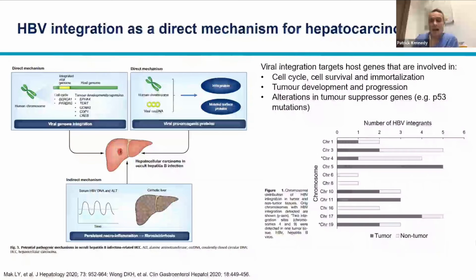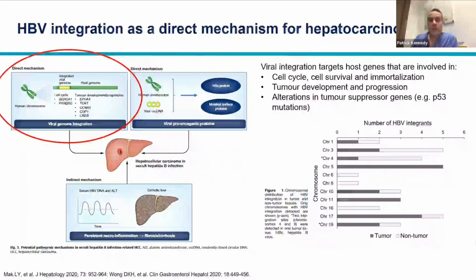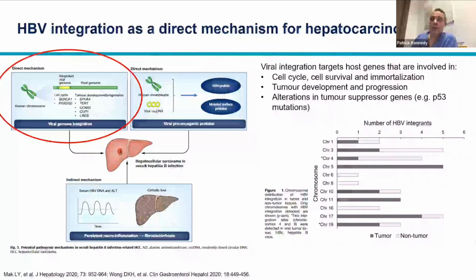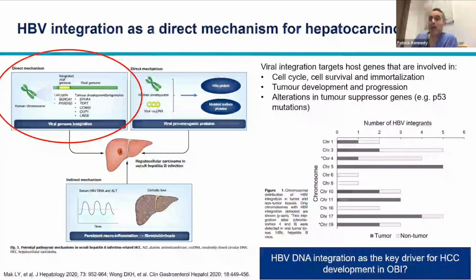Occult B infection — where surface antigen is absent but HBV DNA replicates at very low levels — is also important. Patients with occult B infection are at risk for HCC development, and as shown in a recent review, HCC in occult B infection is most likely being driven by HBV DNA integration.